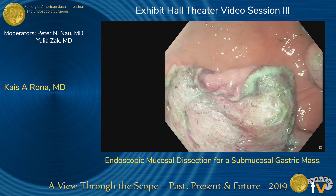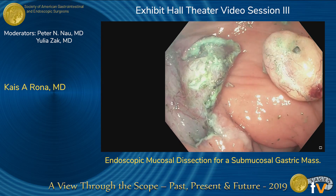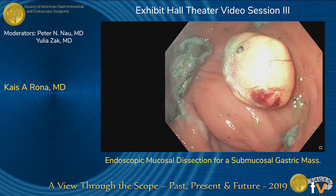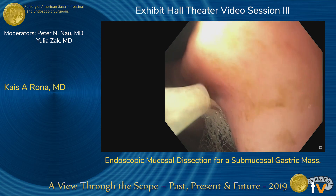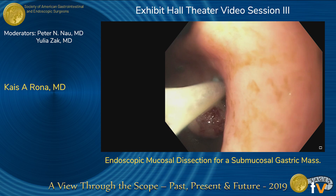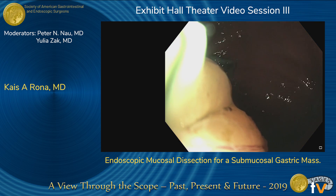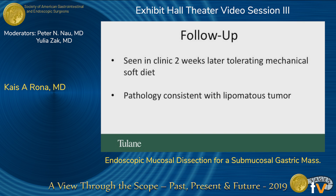Once it's completely detached, we use an endonet to remove the specimen from the gastric lumen. We tried to close that mucosal defect, which proved a little more difficult than imagined. If it were in the esophagus, you definitely want to close those defects, but in the stomach you can leave it. The patient did excellent postoperatively with no complications — discharged on postop day one tolerating a clear liquid diet. We have a protocol using PPIs and carafate.